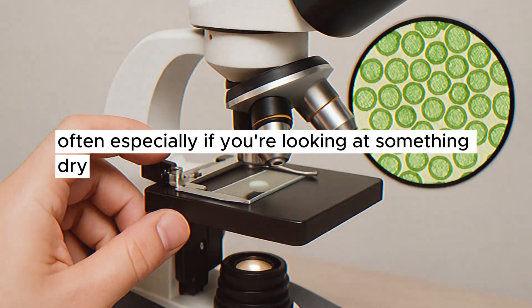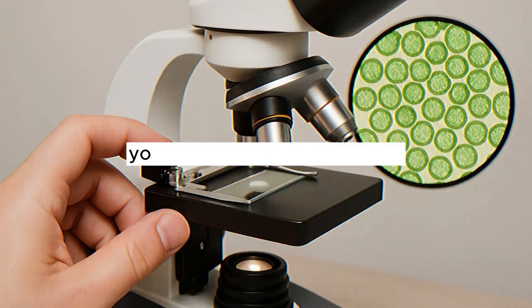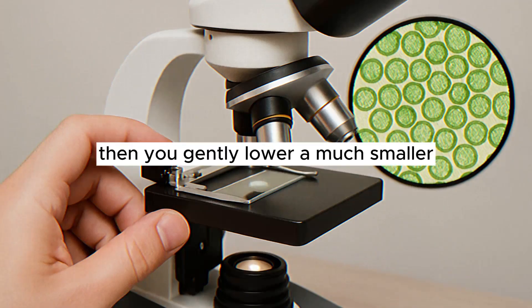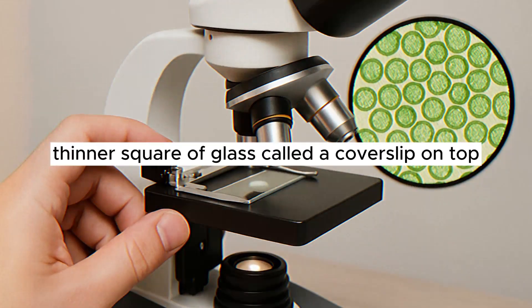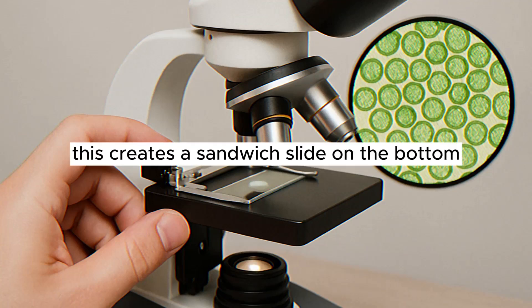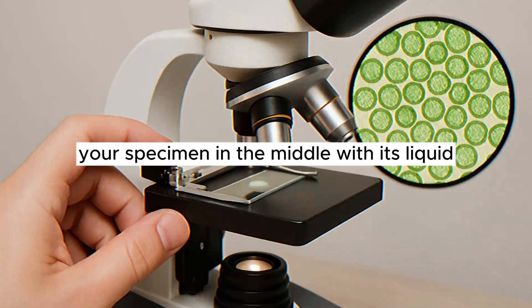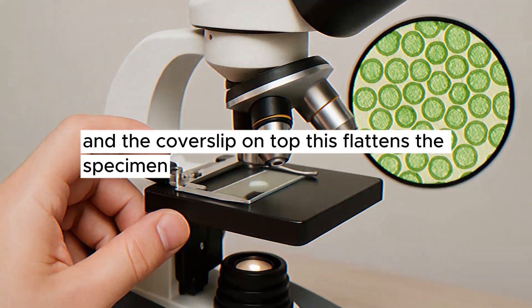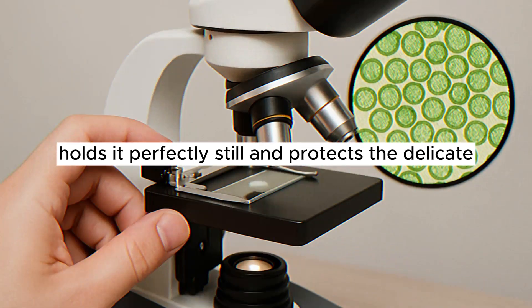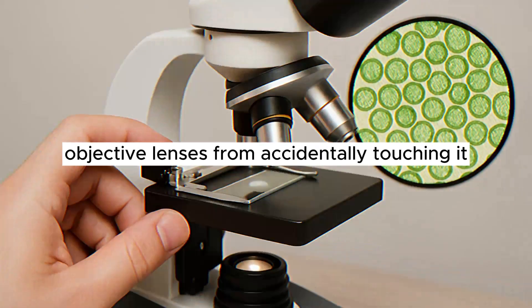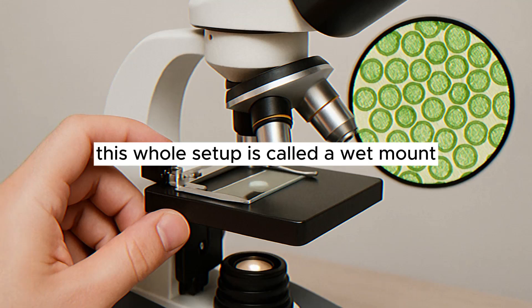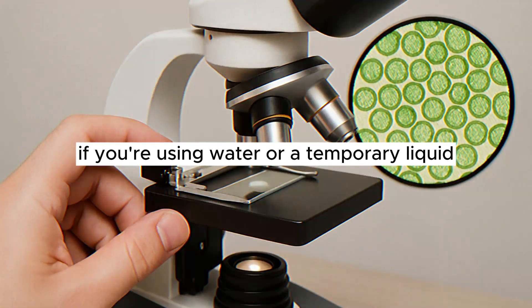You place your tiny piece of specimen onto the center of the slide. Often, especially if you're looking at something dry or something you want to preserve, you add a single drop of water or a special mounting medium onto the specimen first. Then, you gently lower a much smaller, thinner square of glass called a cover slip on top. You lower it at an angle to avoid trapping big air bubbles. This creates a sandwich: slide on the bottom, your specimen in the middle with its liquid, and the cover slip on top. This flattens the specimen, holds it perfectly still, and protects the delicate objective lenses from accidentally touching it. The cover slip also creates an even surface for the light to pass through. This whole setup is called a wet mount if you're using water or a temporary liquid.